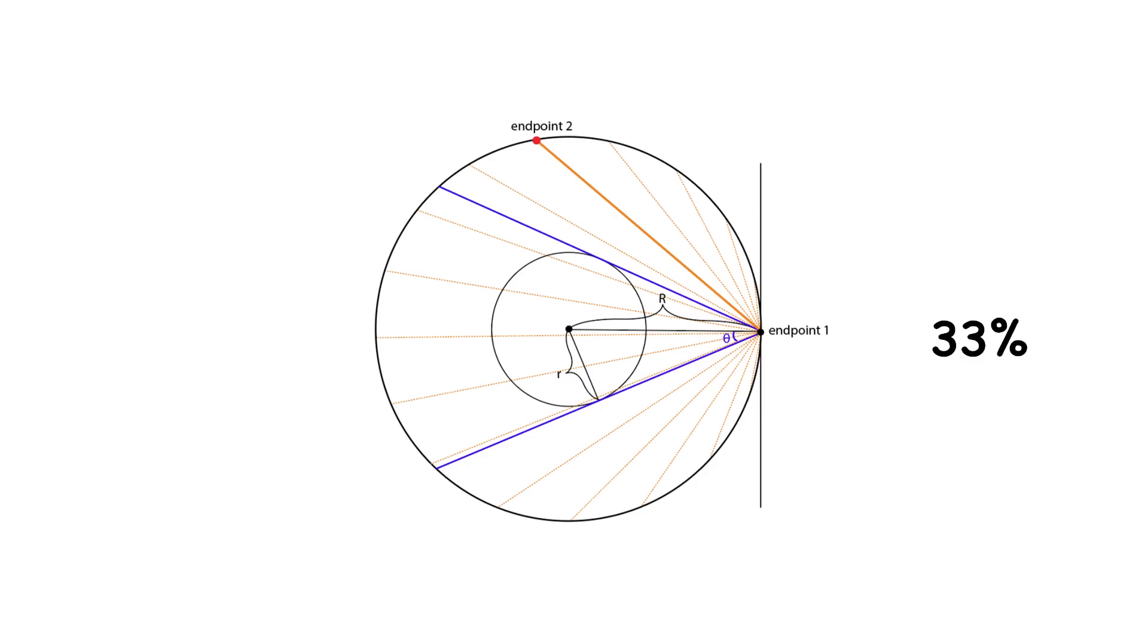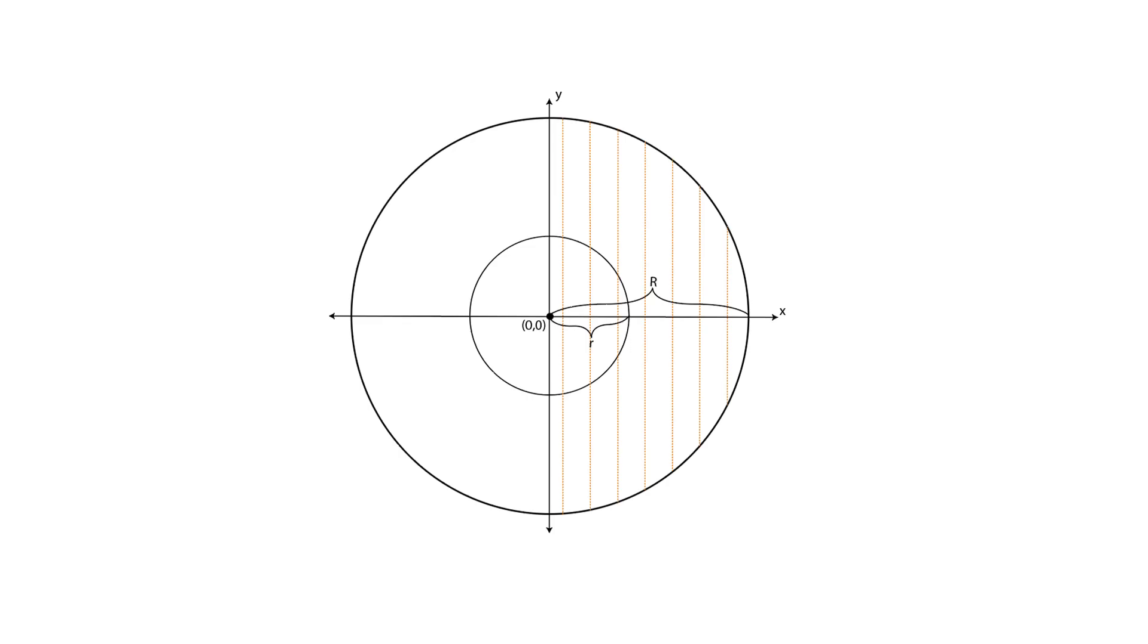Second, in the random radius method, you start by choosing a random line from the center of the circle, out to its edge, this line is called a radius, then you pick a random point along this line and draw a chord that's perpendicular to the radius.